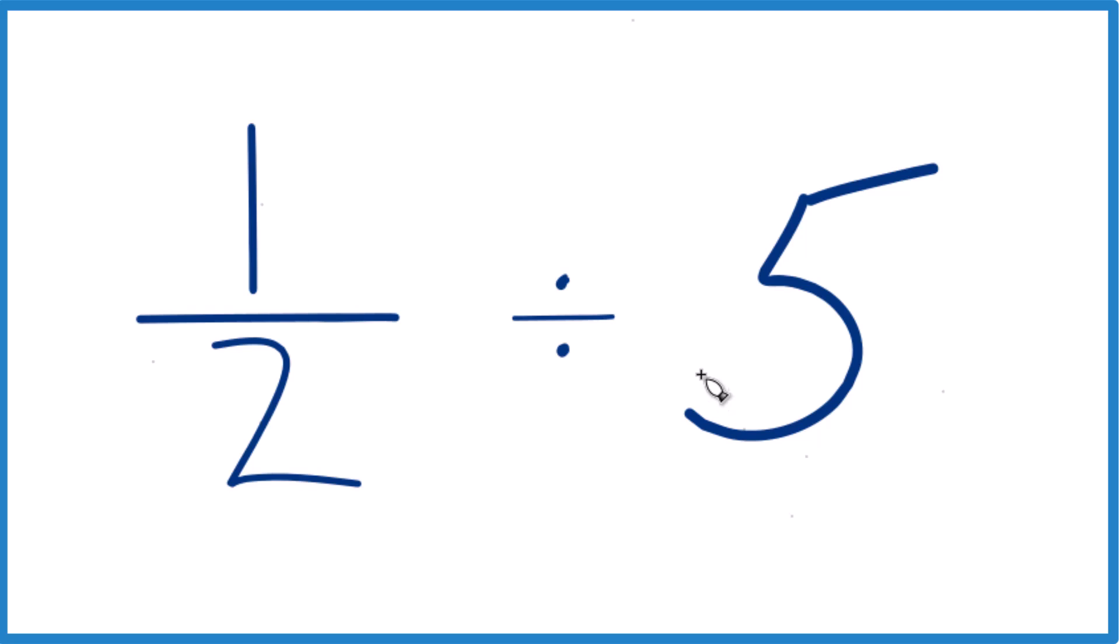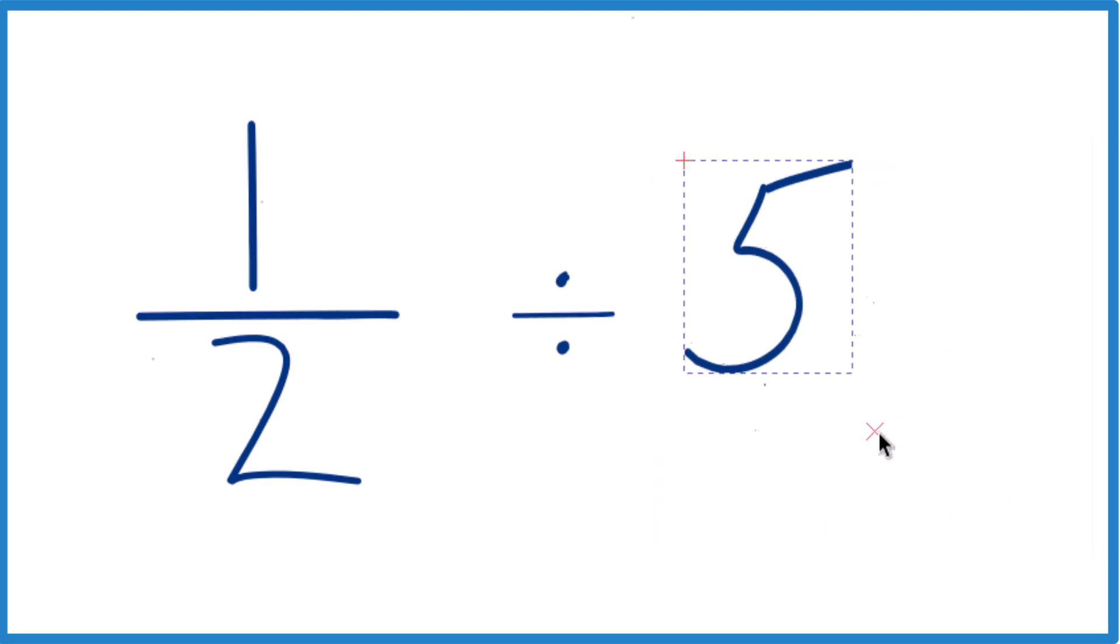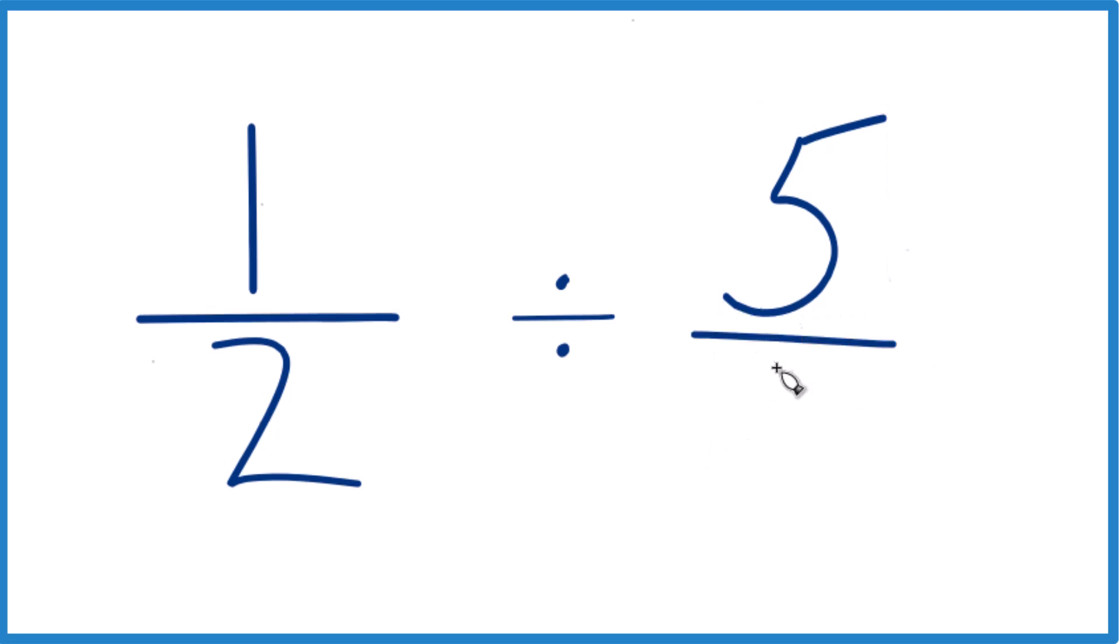That's kind of helpful. What we can do is take the 5 here. Instead of 5, let's call this 5 over 1. It's 5 over 1, it's still 5, but now we have these two fractions here.